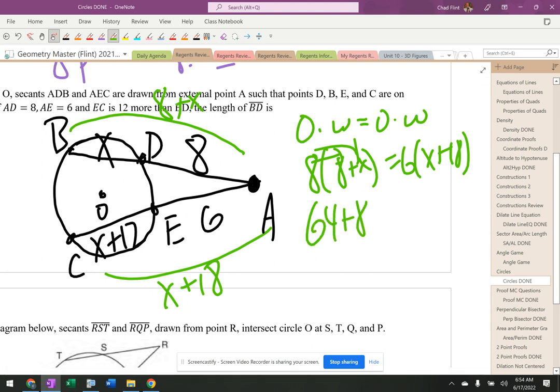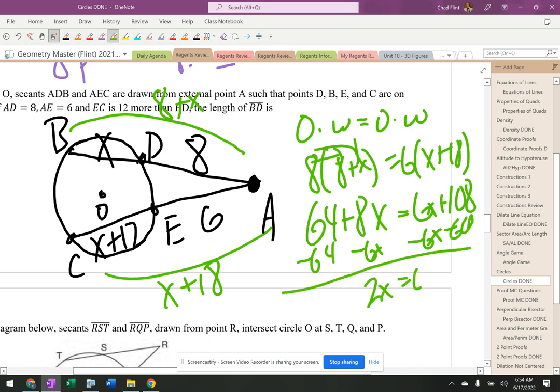So it's 64 plus 8X equals 6X plus 60, and 48 is 108. I'm going to move this, and I'm going to get 2X equals 64, X equals 32. All right, so I get X equals 32, and it says the length of BD is, and so it's 32.